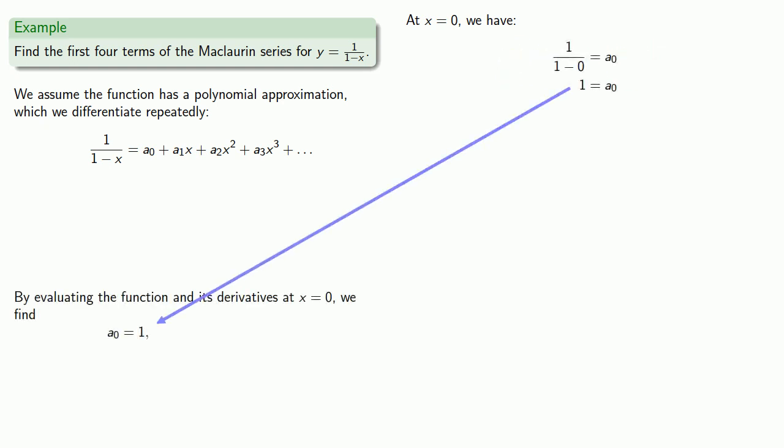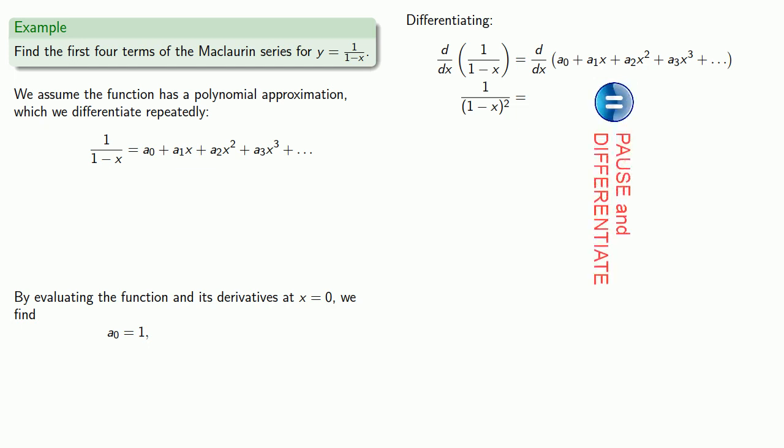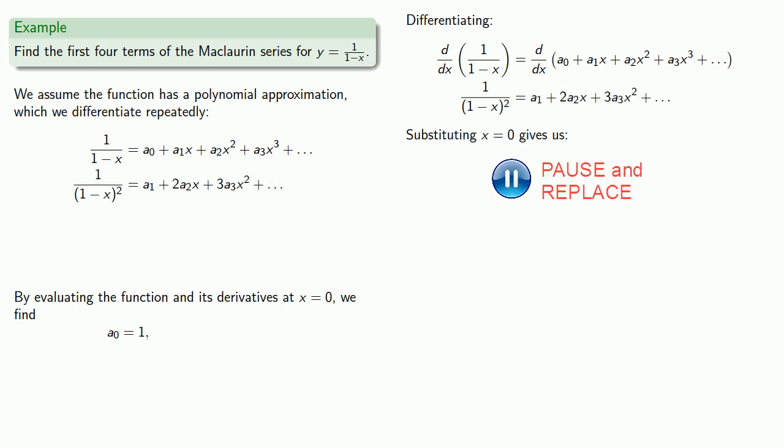To get the other coefficients, we can differentiate repeatedly. The derivative of the left-hand side and the derivative of the right-hand side. Substituting x equals 0 gives us, and so all of our other terms drop out, and we have 1 is equal to a₁.